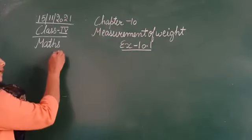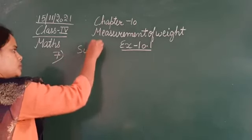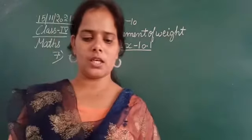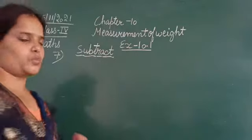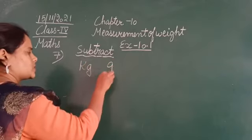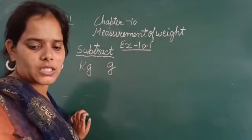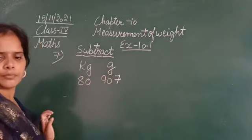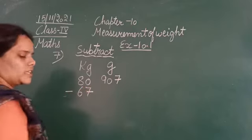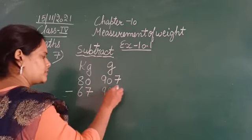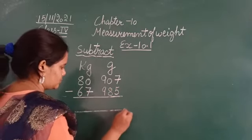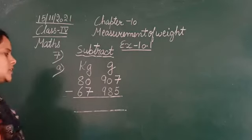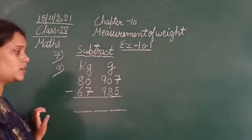So now in question number 7 we need to subtract. So now we are going to subtract. Subtract A: 1 kg and grams. So the two standard units of measurement are kilogram and gram. 80 kg 907 grams minus 67 kg 985 grams. So this is the A part of question number 7.